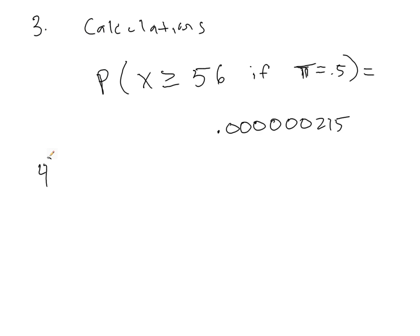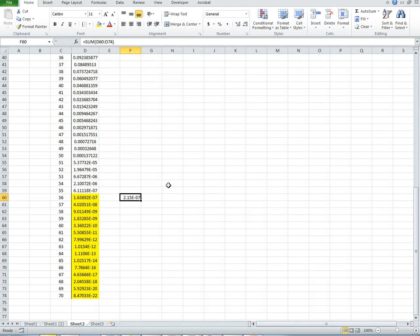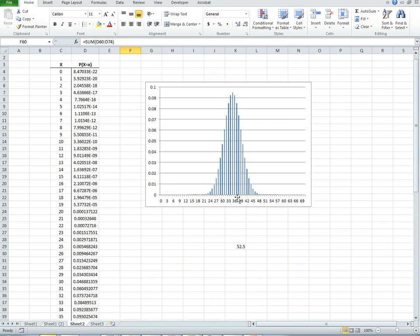So what does this allow us to conclude? Well, what we've observed is very unlikely to just be due to sampling variability. So we think that because we got 56,